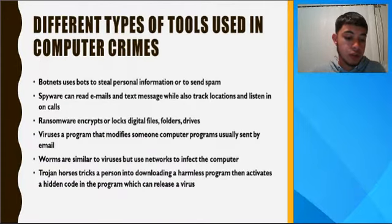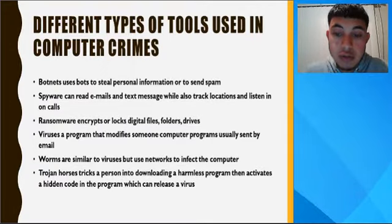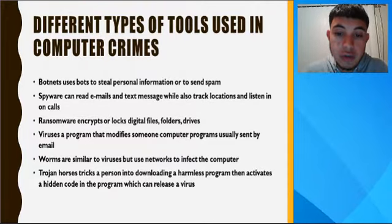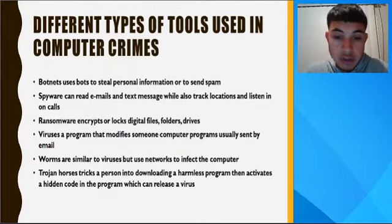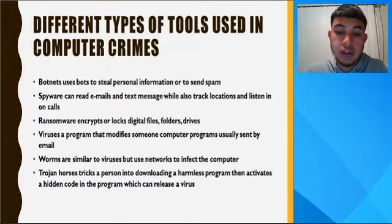Many people do not realize that there is a lot more to computer crimes, such as different tools used to access a person's computer. Here are a few different tools hackers use: Botnets — use bots to steal personal information or to send spam. Spyware — can read emails and text messages while also tracking locations and listening in on calls. Ransomware — encrypts or locks digital files, folders, and drives. Viruses — programs that modify someone's computer programs, usually sent by email. Worms — similar to viruses, but use networks to infect computer programs. Trojan Horses — trick a person into downloading a seemingly harmless program, then activate a hidden code which can release a virus and steal personal information.